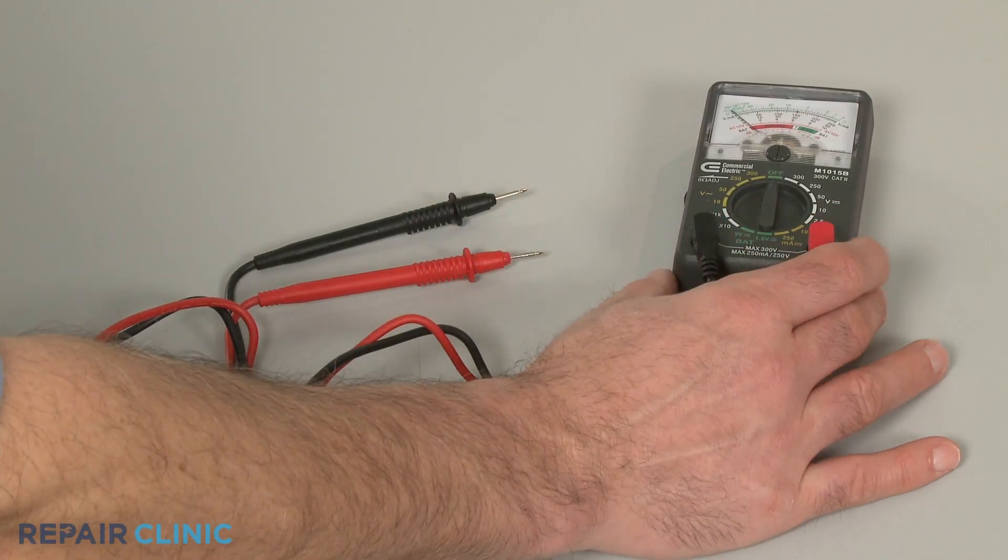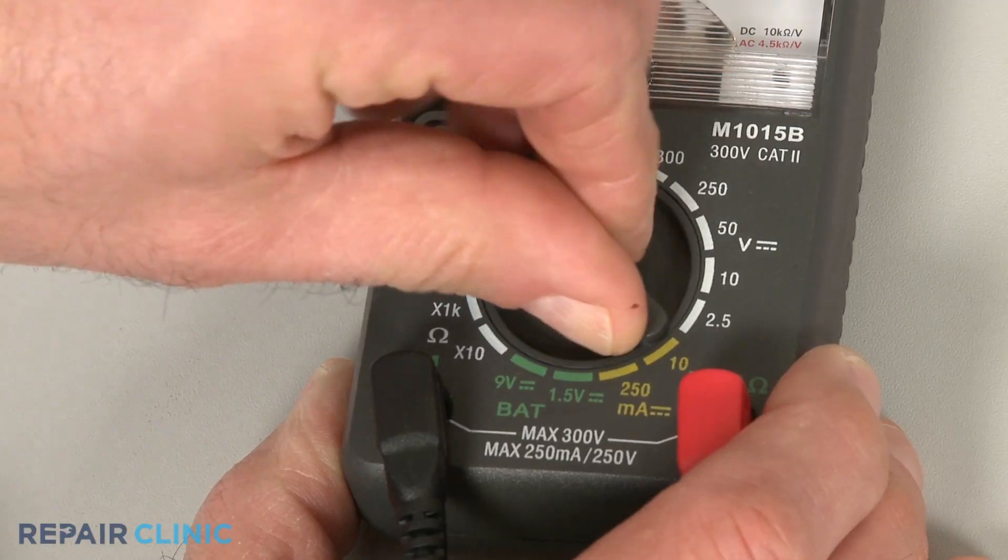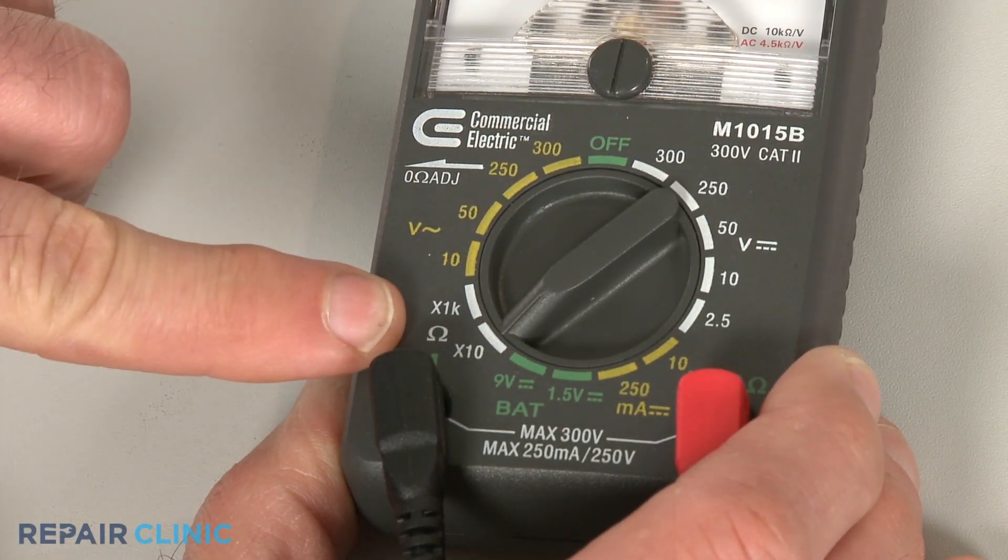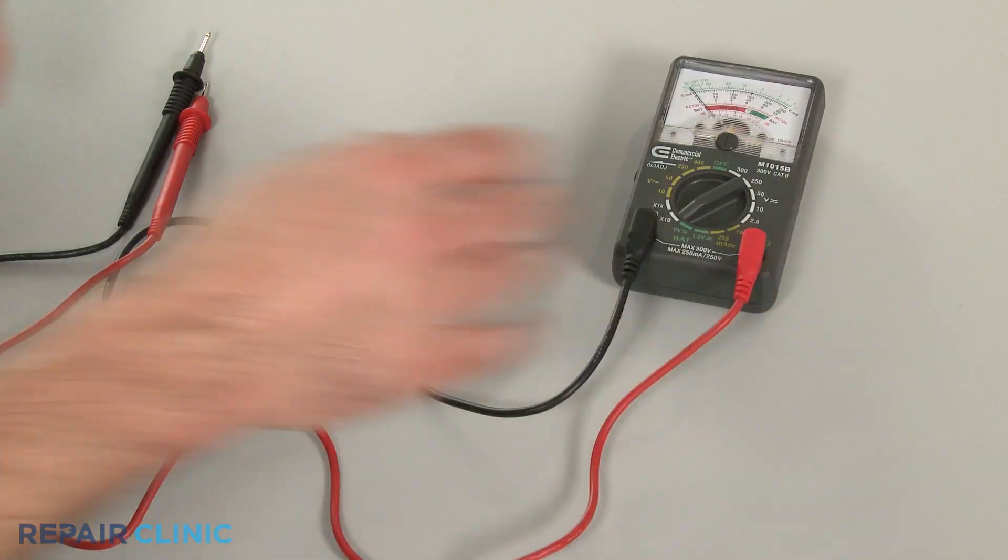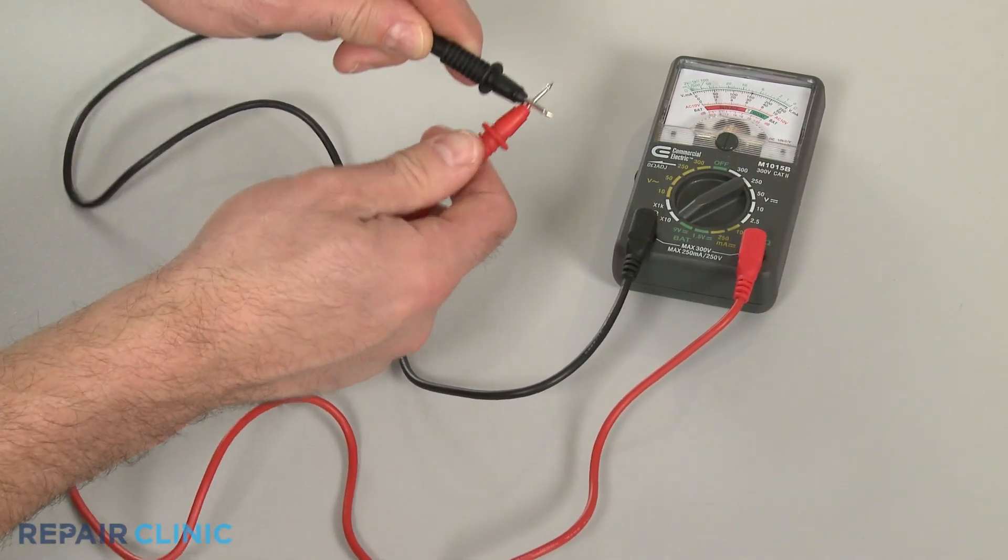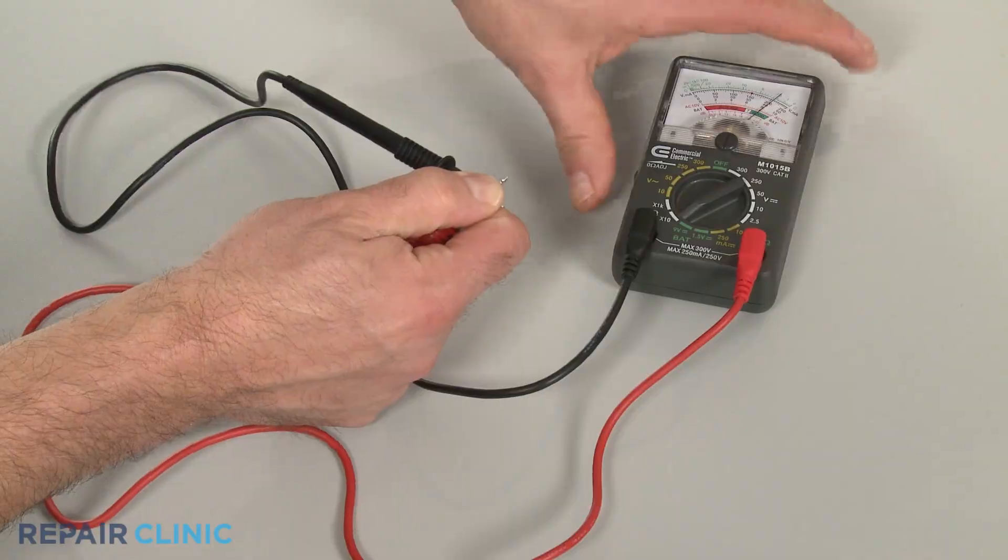When using an analog model, first rotate the range selection dial to the lowest setting for ohms of resistance. Then calibrate the meter by pinching the probes together while adjusting the needle to read zero.